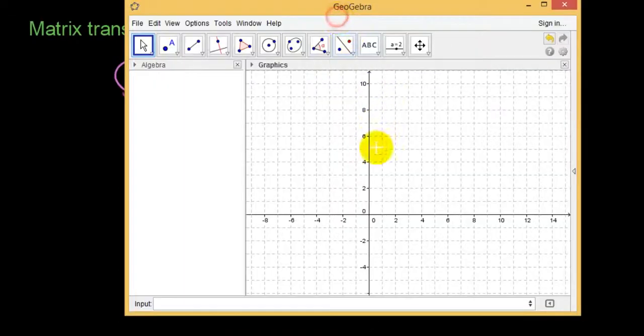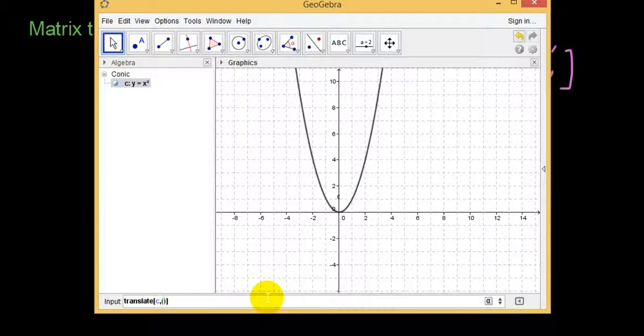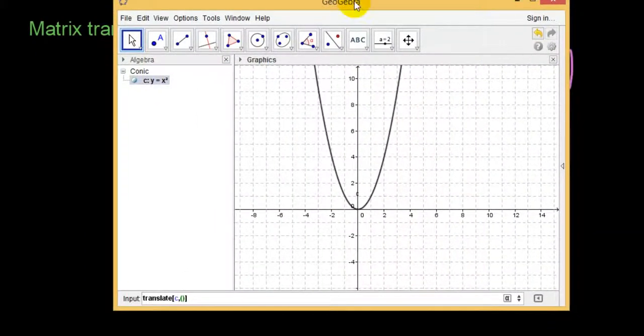I draw y equals x squared and I want to translate it using the matrix 2, 3, so I type translate. Translate object is c and the vector or the matrix that I'm translating it with is 2, 3.